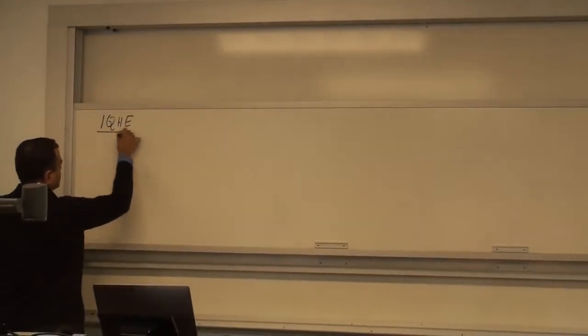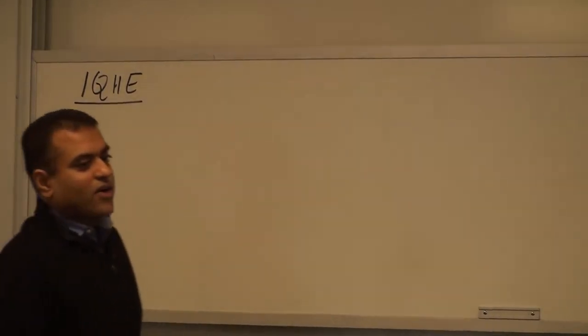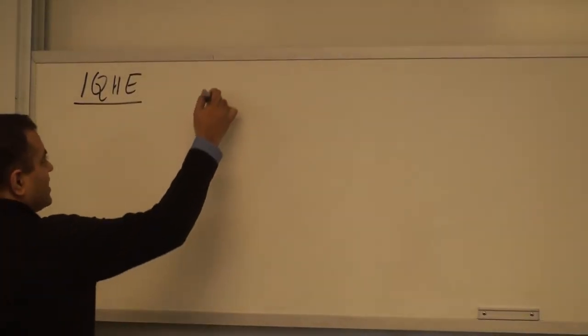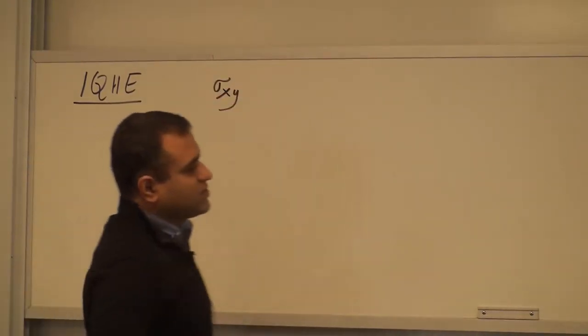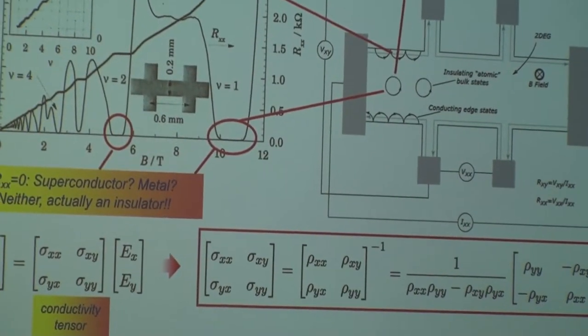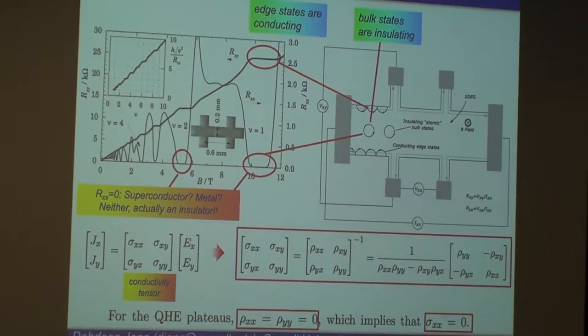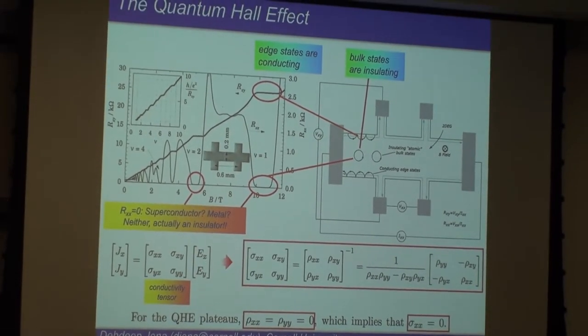This is the integer quantum Hall effect (IQHE), discovered in 1980 in silicon MOSFETs, and since seen in all kinds of two-dimensional electron gases. The transverse conductance σxy is quantized: it equals e² over Planck's constant times an integer.